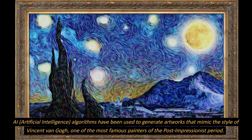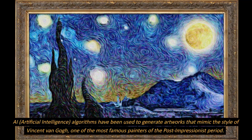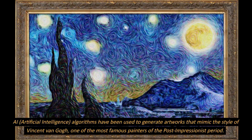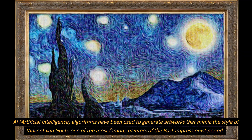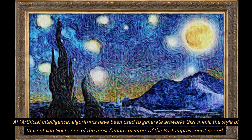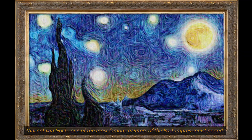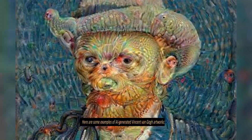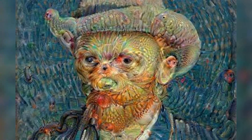AI, artificial intelligence algorithms have been used to generate artworks that mimic the style of Vincent van Gogh, one of the most famous painters of the post-impressionist period. Here are some examples of AI-generated Vincent van Gogh artworks.